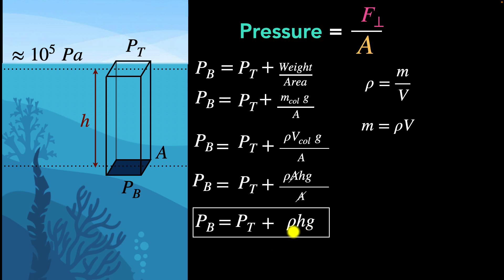What's really surprising is that for a given non-compressible fluid with a specific density, the pressure difference between two points only depends on their height difference — nothing else. This means the pressure difference between two points 10 centimeters apart is the same whether you consider that in an ocean or a tiny test tube. It doesn't matter how much water you're dealing with — it's just the height that matters.